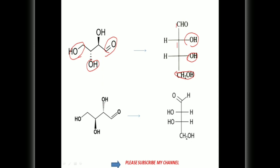Now here, this OH is below the plane and directed upward, so it must be written on the left side. And this OH is in downward direction and above the plane, so again you have to write it on the left side. These two structures are mirror images because in one, the group is above the plane, and in the other it is below the plane — and vice versa. These two are also mirror images. This structure, with both OH groups on the same side, is de-erythrose.